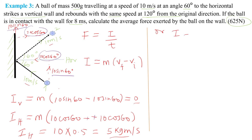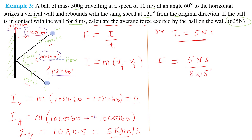The impulse is 5 newton seconds. The question asks for the average force. Average force equals impulse divided by time: 5 newton seconds divided by 8 milliseconds, which is 8 × 10⁻³ seconds. Feeding this into the calculator gives 625 newtons.